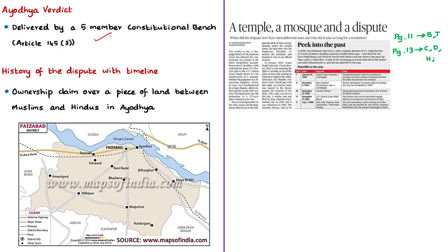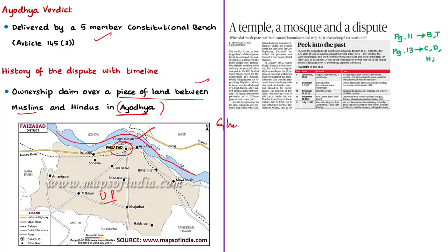This judgment is centered around a dispute between two religious communities — Muslims and Hindus — both claiming ownership of a piece of land in Ayodhya. From a prelims point of view, note that Ayodhya is the headquarters of Faizabad district in the state of Uttar Pradesh, located on the banks of the Saryu, also known as the Ghagra river. The Ghagra river is one of the main left-bank tributaries of river Ganga.